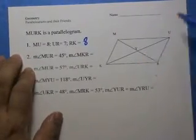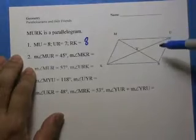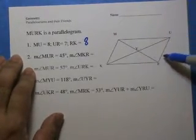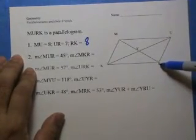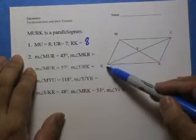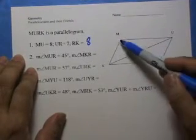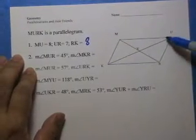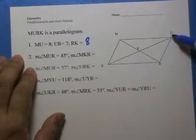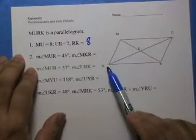Number 2, angle MUR is 45 degrees. Angle MKR is what's being asked for. MUR is opposite from angle MKR. So MUR is basically over here, MKR is over here. Those are opposite angles.